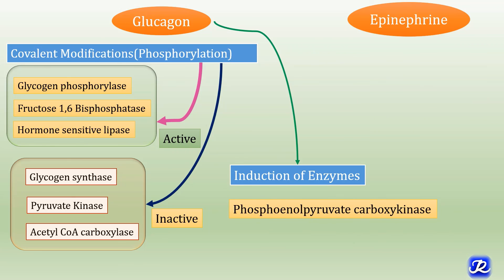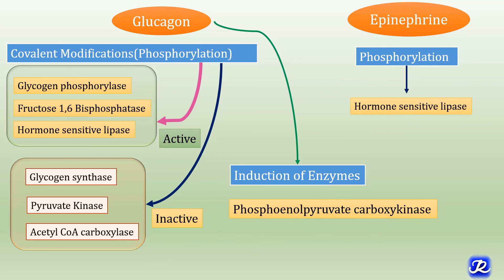Glucagon also induces the synthesis of phosphoenolpyruvate carboxykinase, an important enzyme in gluconeogenesis, thereby increasing the rate of gluconeogenesis. Epinephrine phosphorylates hormone-sensitive lipase and thus increases the rate of lipolysis in adipose tissue.